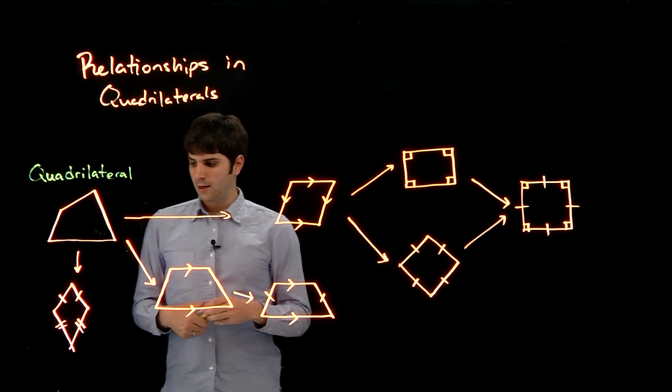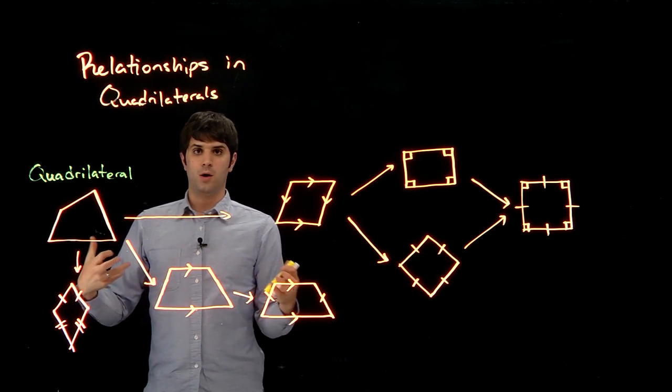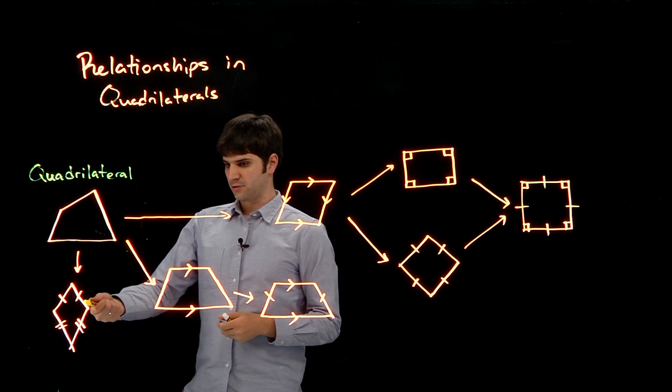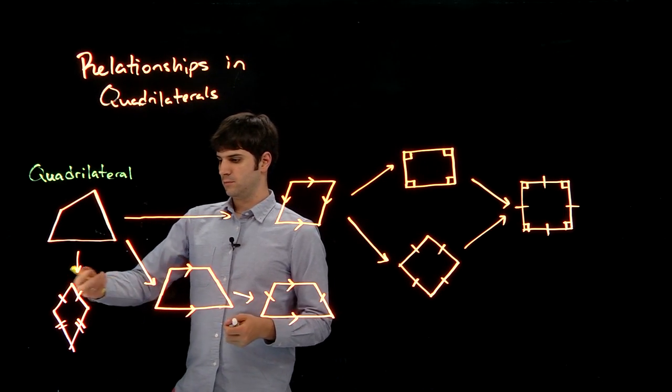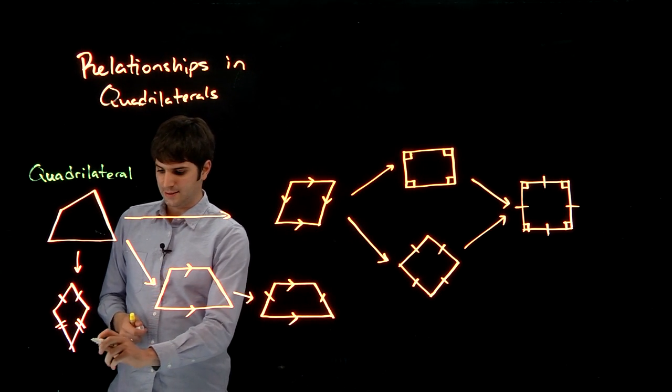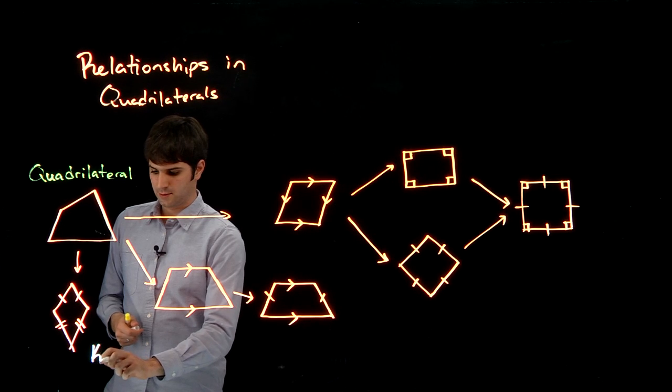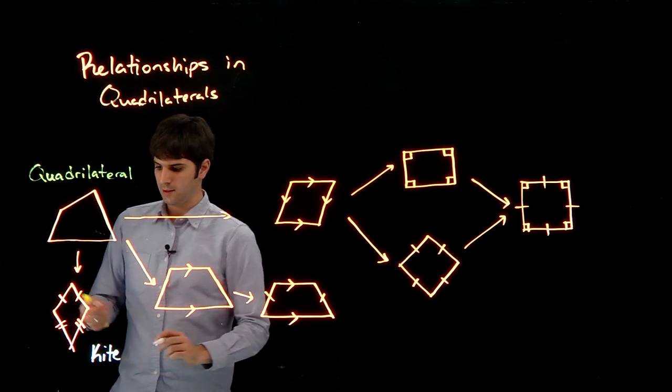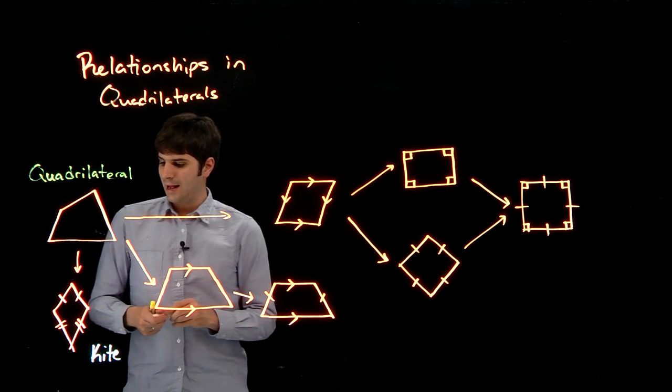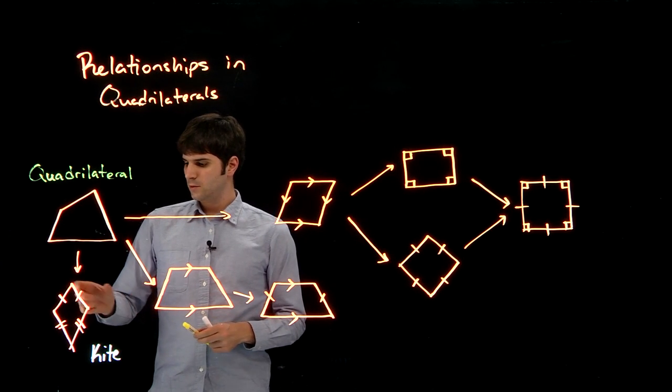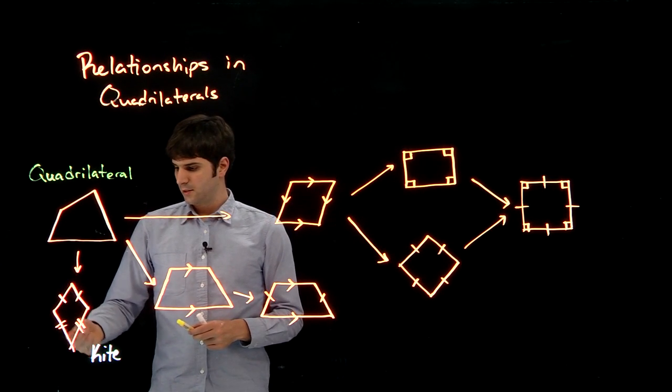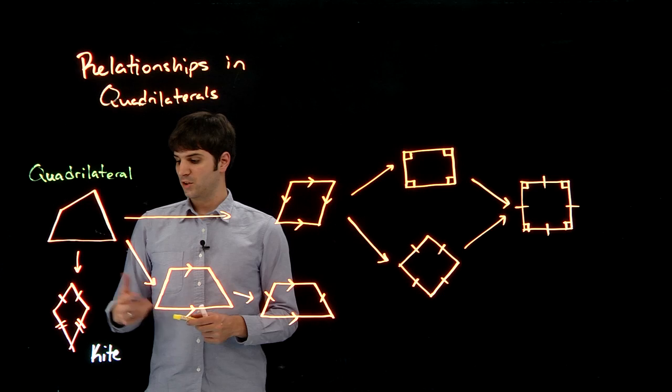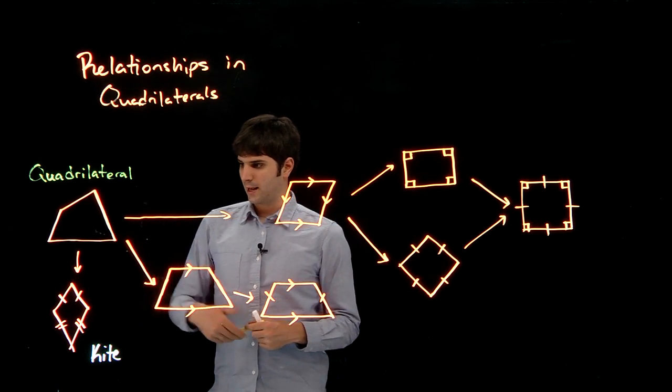And now, there are three main types of quadrilaterals. There's, first of all, there are kites. So we have kites. Now kites are when we have two consecutive sides that are congruent, and that's our definition of a kite.